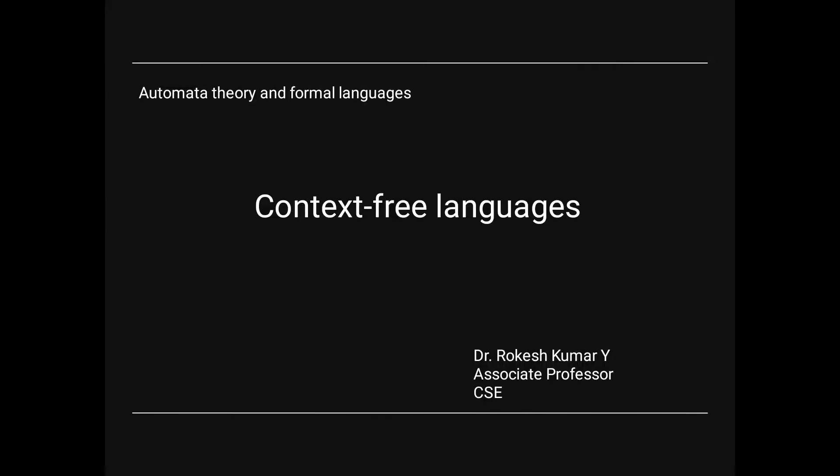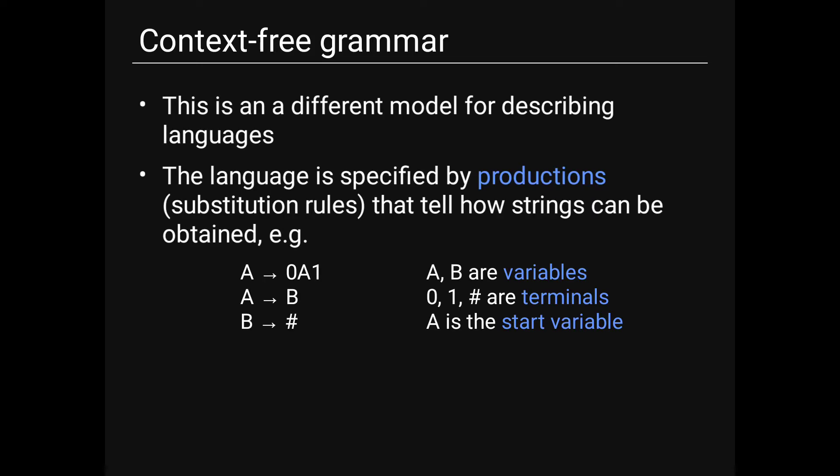Good morning. In automata theory and formal languages, today we discuss context-free languages. The definition: if G is a context-free grammar, the language of G is defined as the set of all strings in sigma-star that can be derived from start variable S in V. So L(G) = {w ∈ Σ* | S ⇒* w}. A language L is called a context-free language if there exists a context-free grammar G such that L(G) = L.